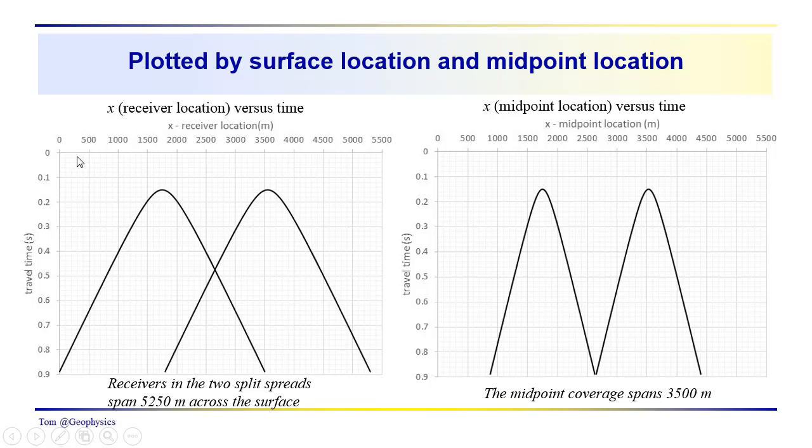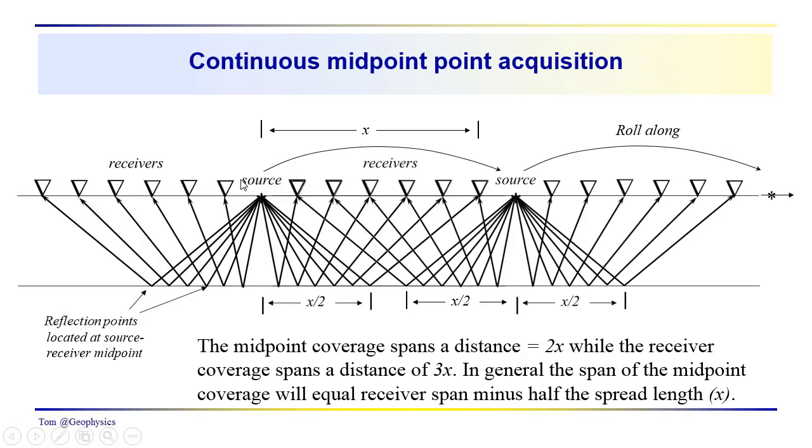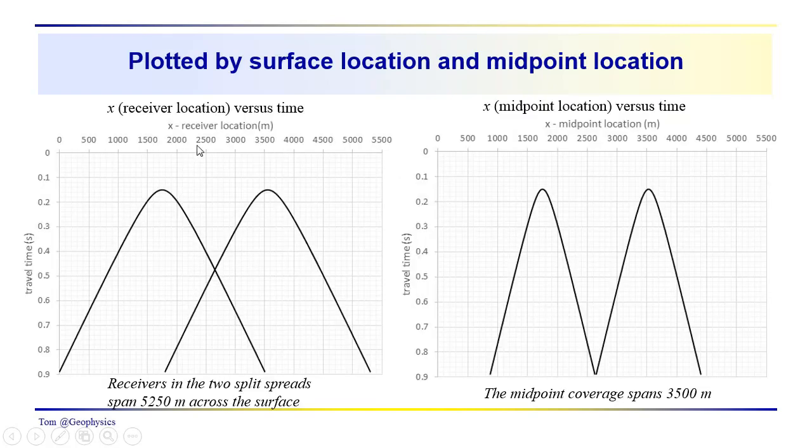So here we're looking at two split spread source receiver combinations with this set of midpoints. We can see that when we plot these up where x is the receiver location, we have an overlap in the reflection hyperbola. So we've got receivers in the two split spreads at a distance of 5,250 meters across the surface. Now if we look at the midpoint location in this case, we have continuous midpoint profiling over a shorter distance and almost continuous reflection point profiling. And we eliminate the overlap in the reflection hyperbola. So we're more interested in a midpoint or a depth point or a reflection point location rather than in this surface location representation.